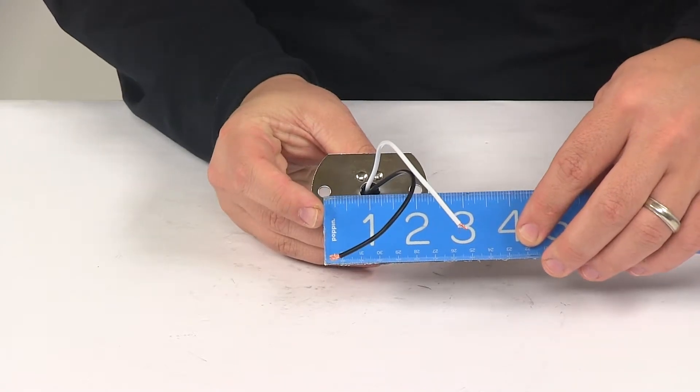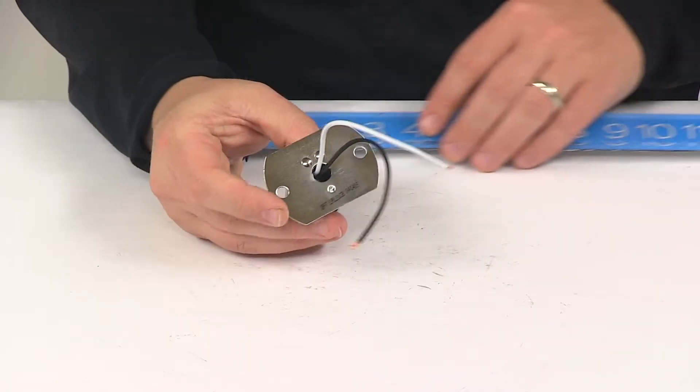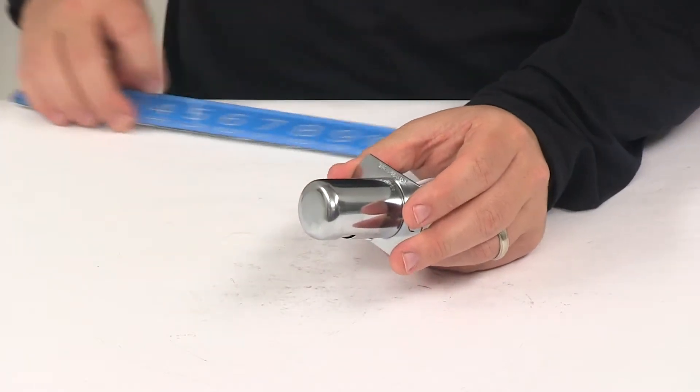The mount holes on the unit are separated on center by about two inches. And the mount hole diameter is going to be a quarter of an inch.